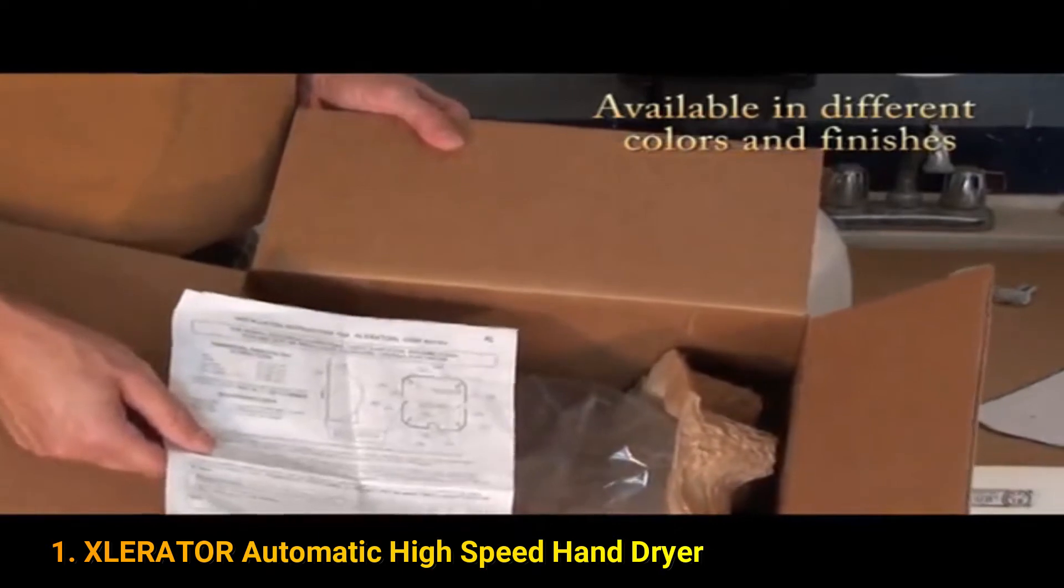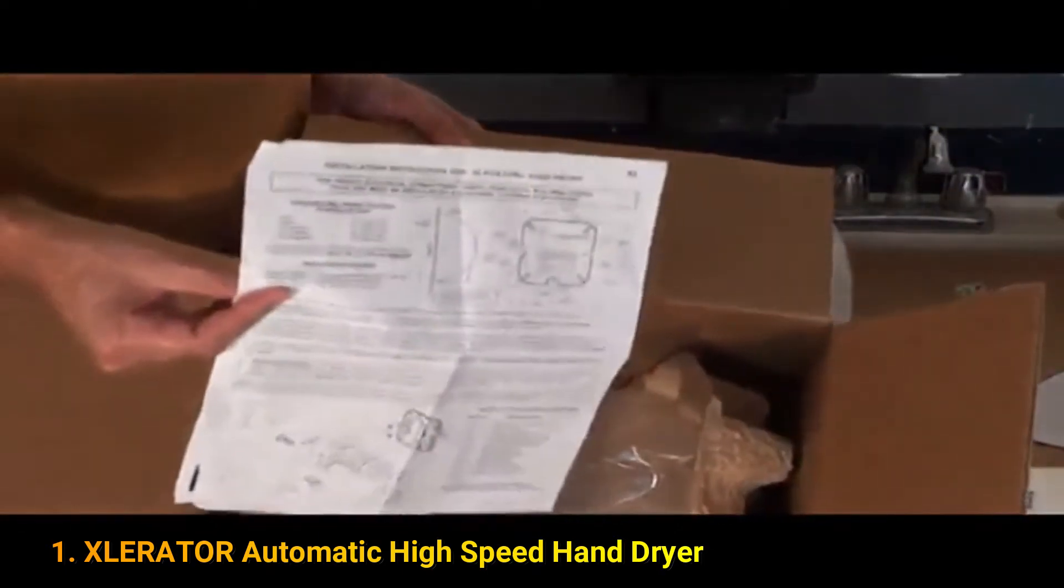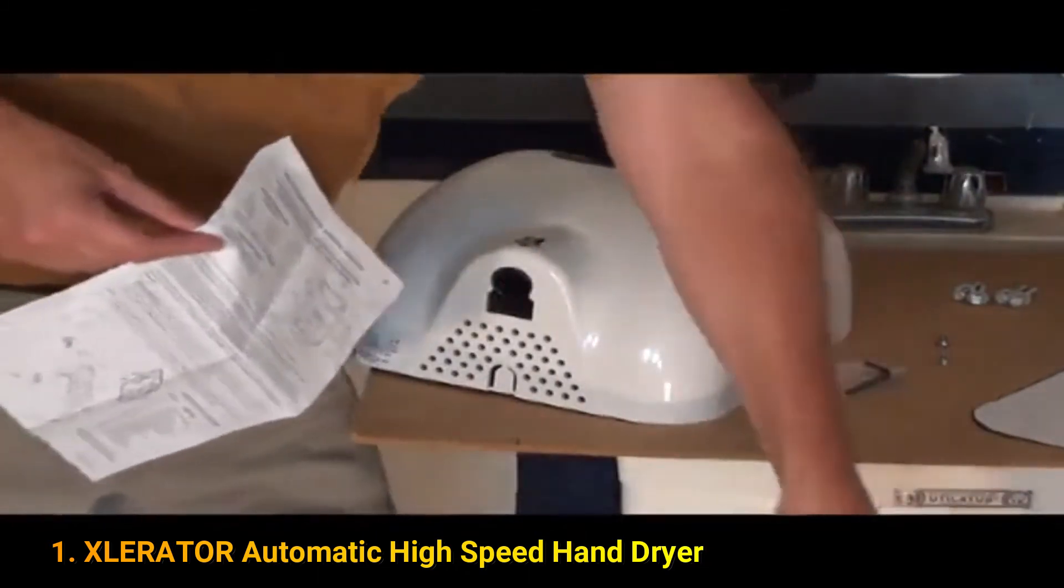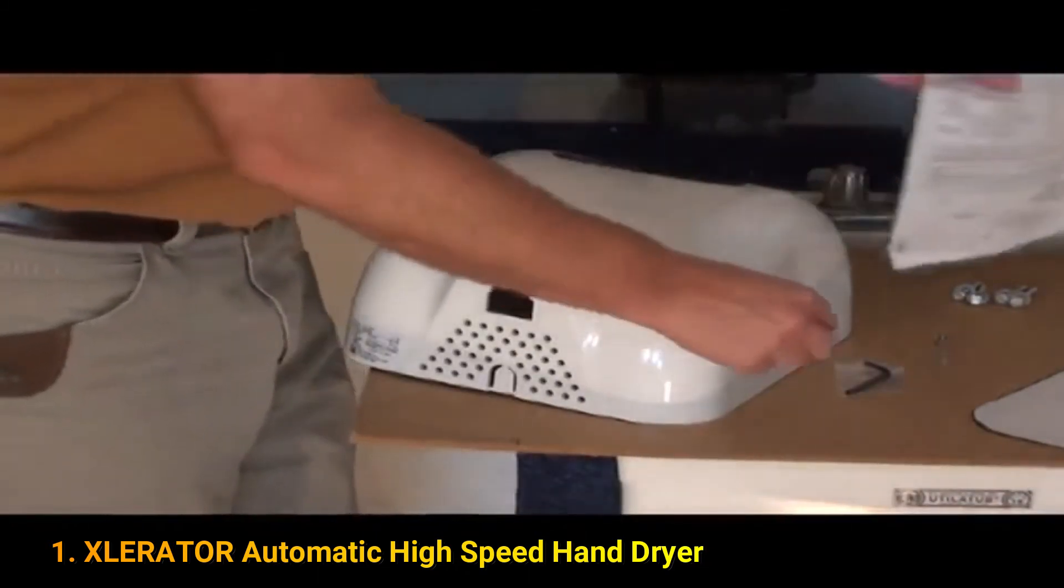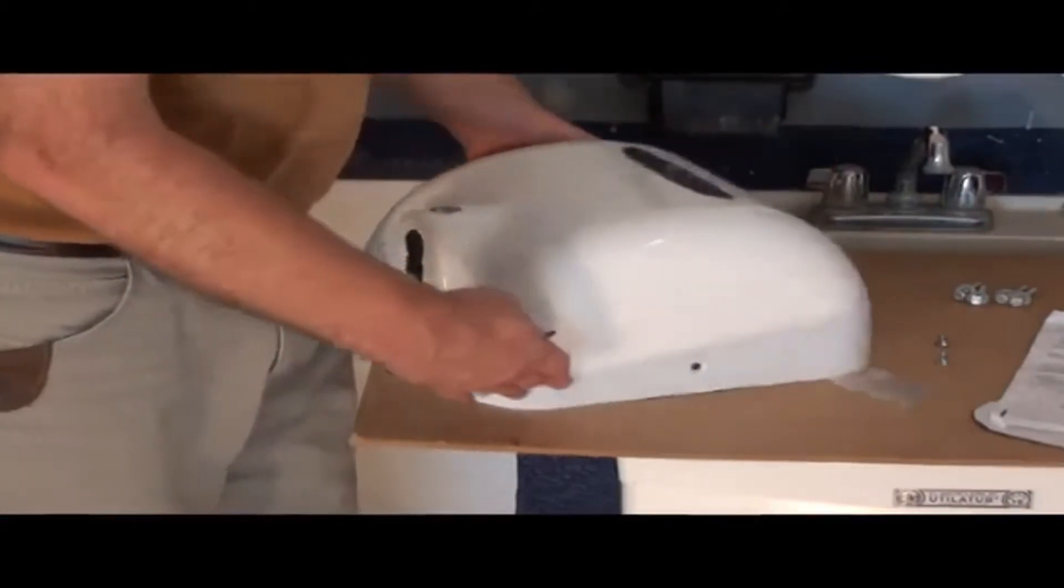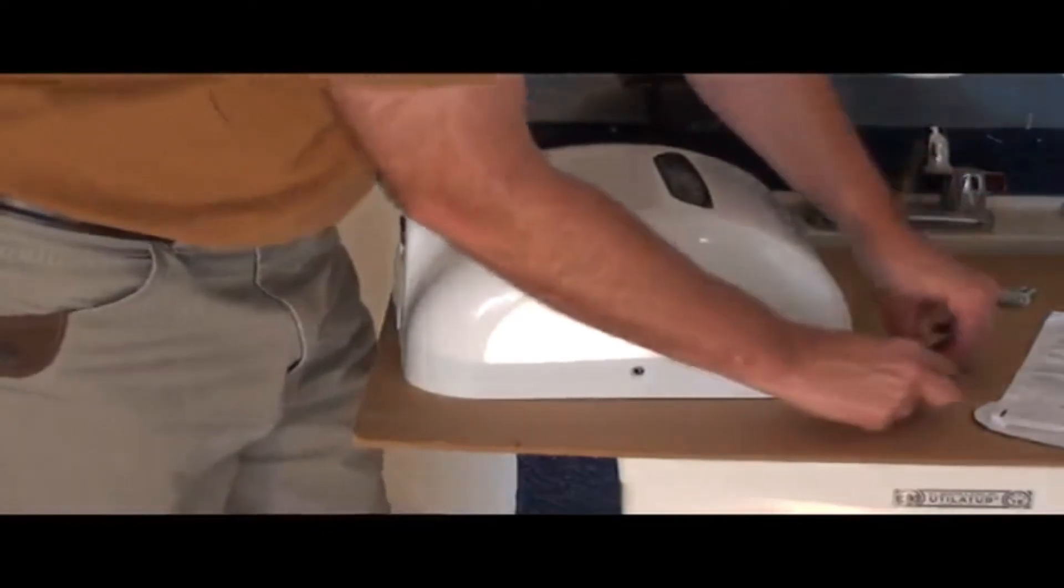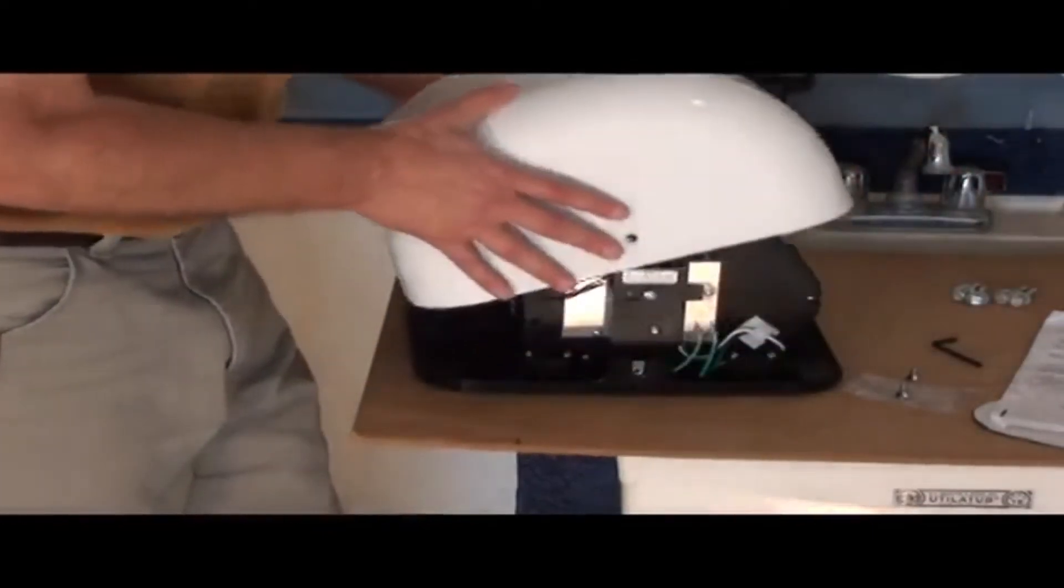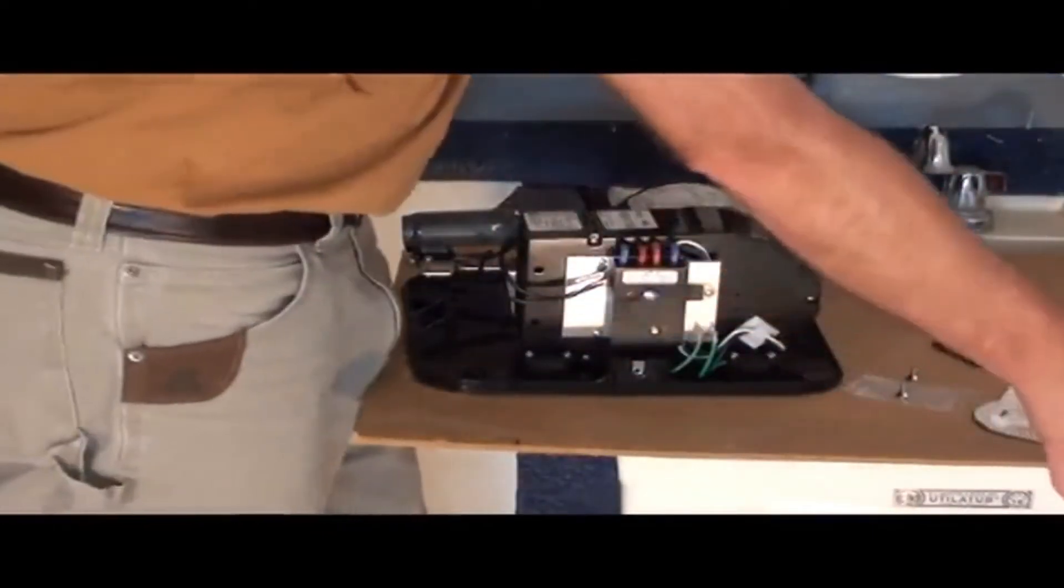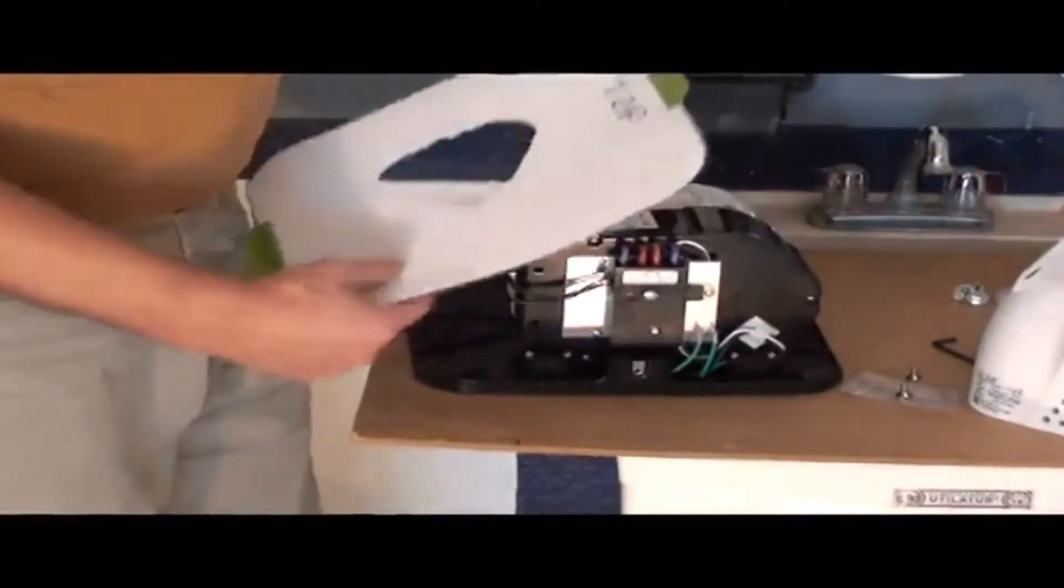So the XLERATOR comes in a box like this. It has instructions. It also includes a tamper-resistant Allen wrench. There's two screws to remove the cover. I've taken those out. It comes off pretty easy. I also made a template to match the bolt pattern.